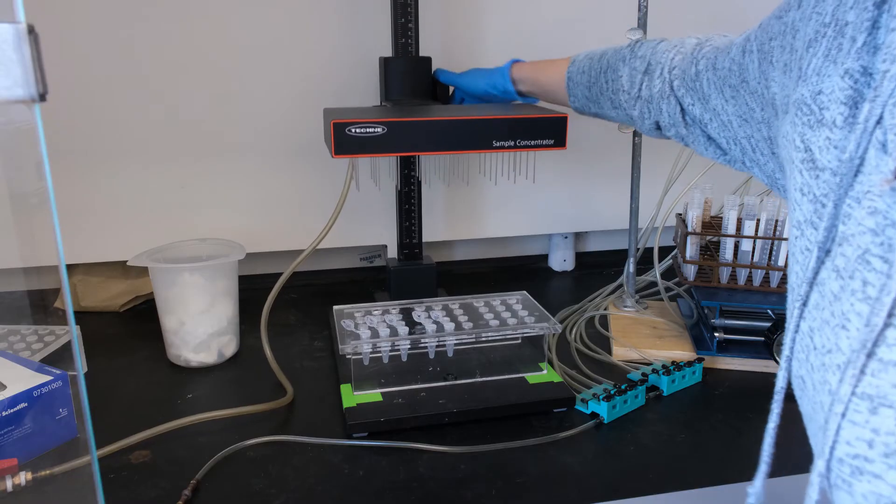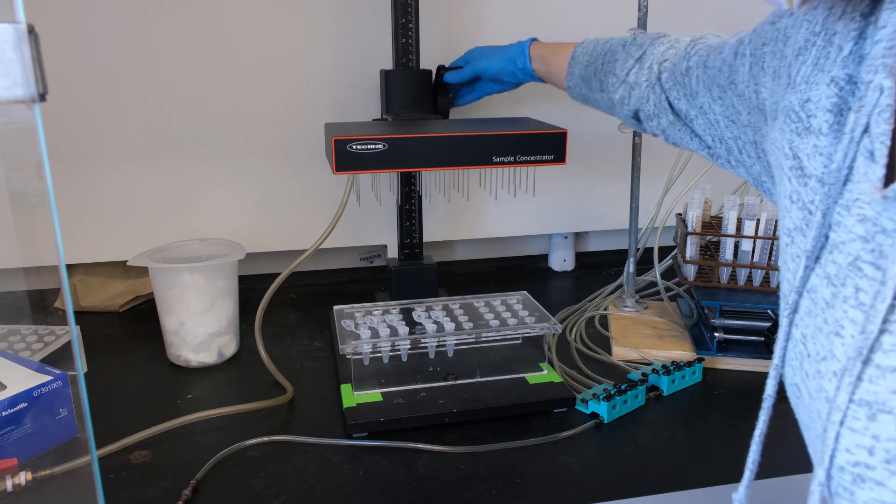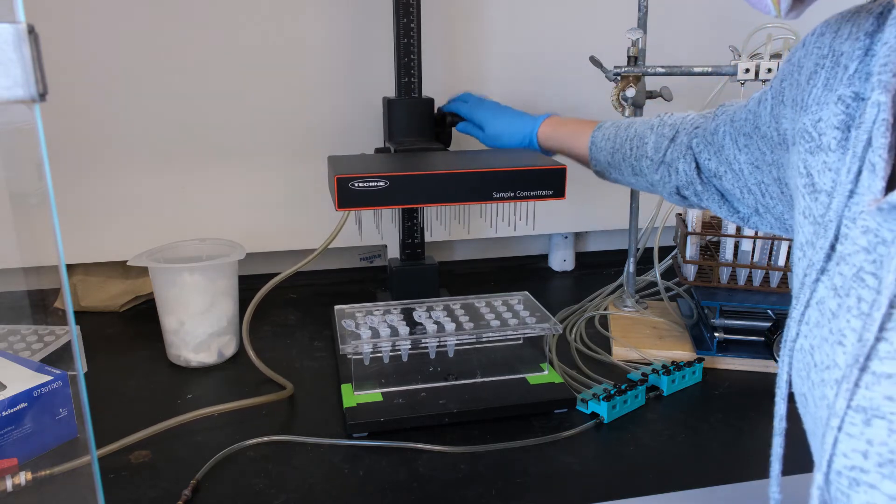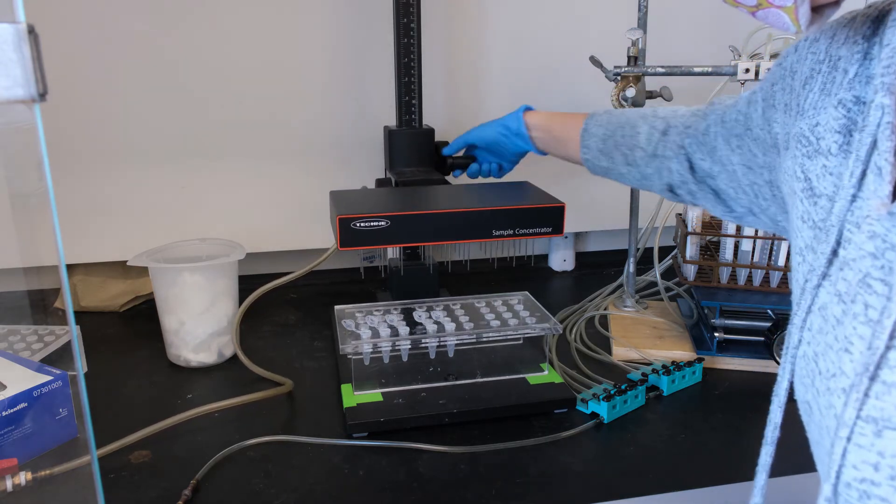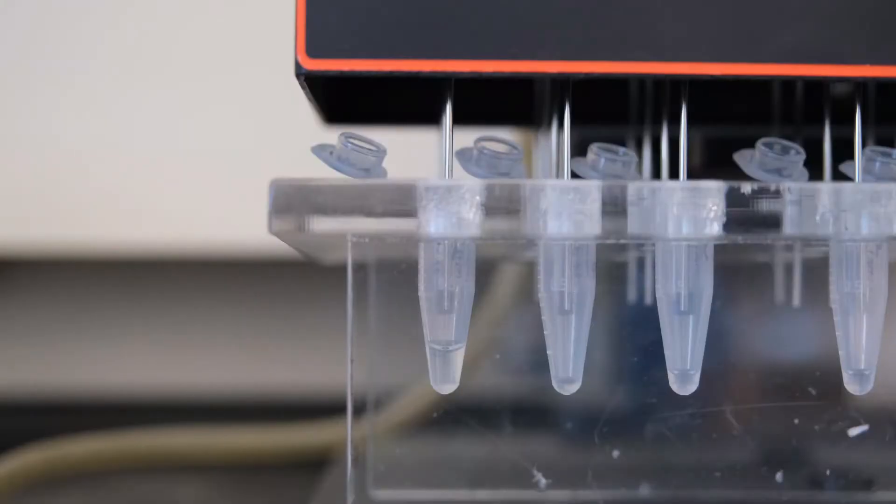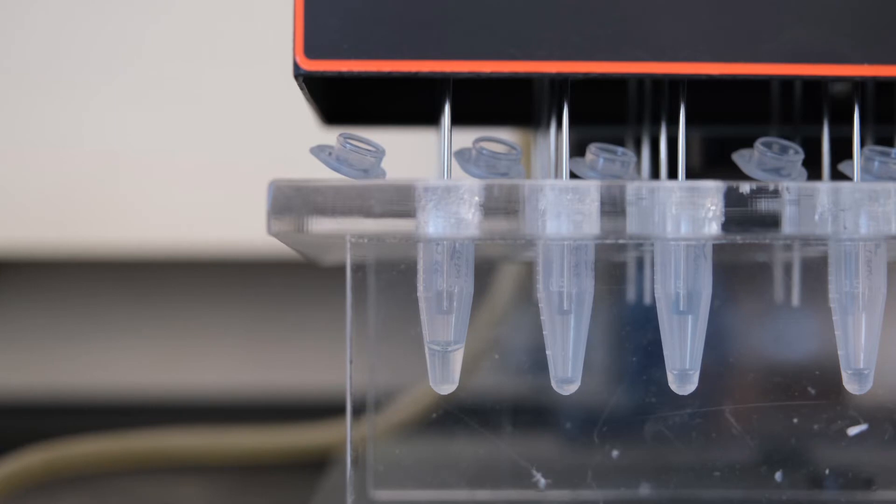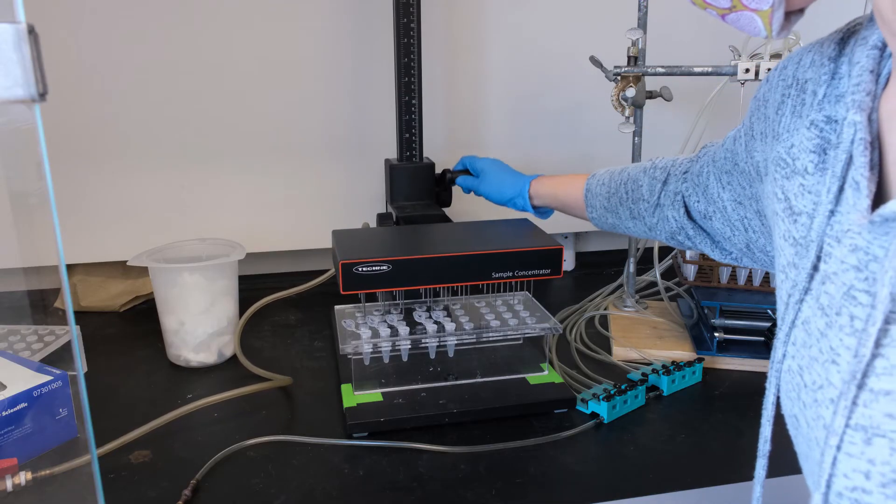Lower the needles using the knob. Pay attention as the needles approach the tubes. Watch closely and adjust as needed. Position the needles such that they enter the tops of the tubes, leaving space between needle and liquid. Do not touch the needle to the liquid. Lower slowly and watch your tubes.